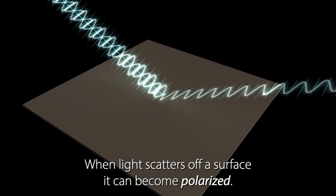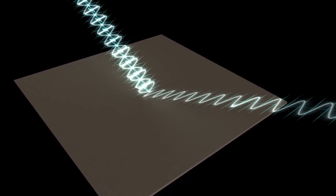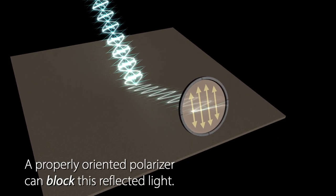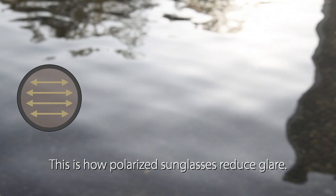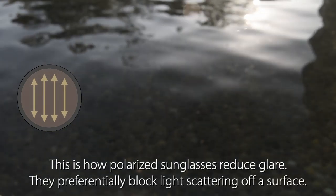When light scatters off a surface, it can become polarized. A properly oriented polarizer can block this reflected light. This is how polarized sunglasses reduce glare. They preferentially block light scattering off a surface.